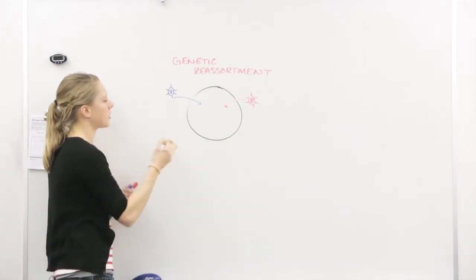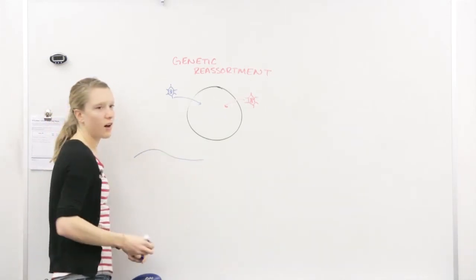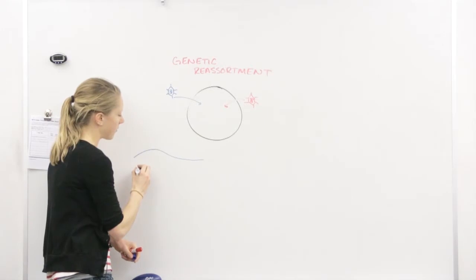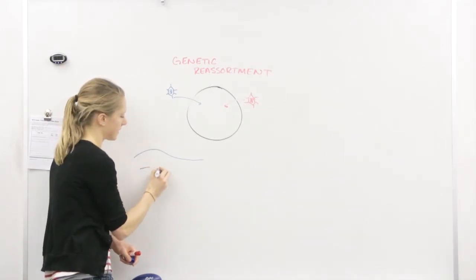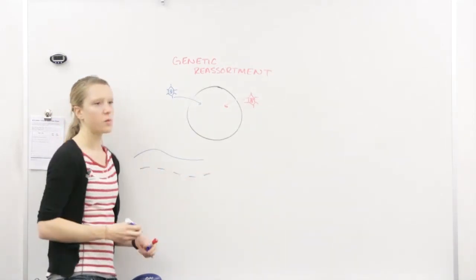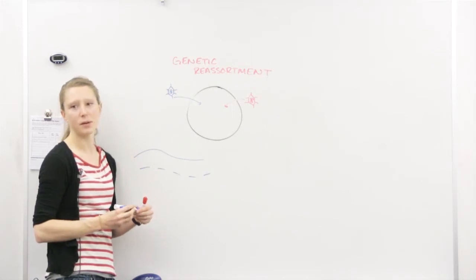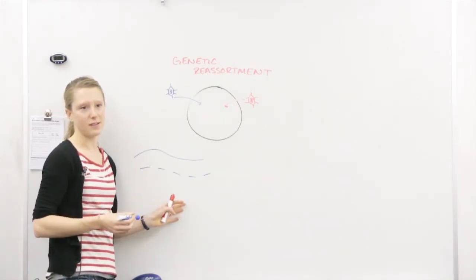Yeah, so we could have a genome like this, one long strain, or we can have our DNA or RNA like this. Which one do you think is more likely to get mixed up? The segmented one, right?